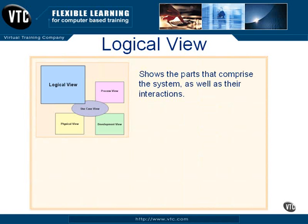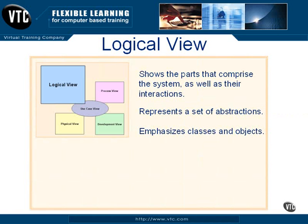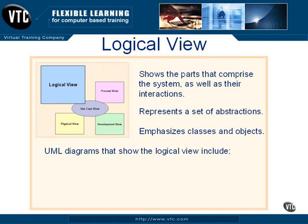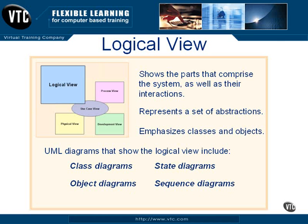Let's start with the logical view. The logical view shows the parts that comprise the system, as well as their interactions. It represents a set of abstractions, emphasizing classes and objects. So you could say that the logical view describes the system's object model. UML diagrams that show the logical view include class diagrams — which are by far the most common kind of UML diagrams, so you'll be seeing and working with these a lot — also state diagrams, object diagrams, sequence diagrams, and communication diagrams.